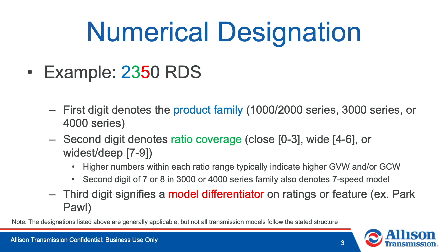A 7 to 9 generally indicates a deep ratio. Within each range, a higher number typically indicates a higher GVW or GCW rating. Also, a 7 or 8 as the second digit in a 3000 or 4000 series transmission denotes that the transmission is a 7-speed model. The third digit signifies a model differentiator on ratings or features, like Park Pawl. Keep in mind, while the designations listed here are generally applicable, not all transmission models follow the stated structure. Please contact your local Allison representative with any questions.